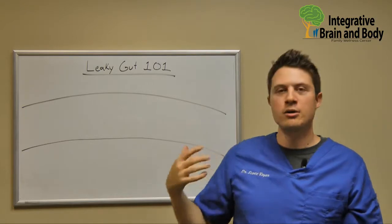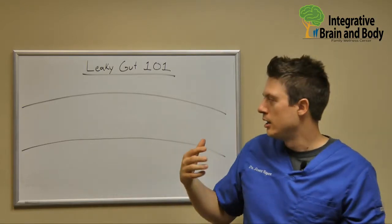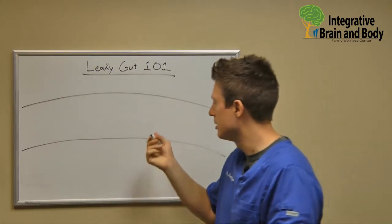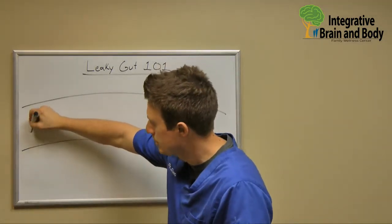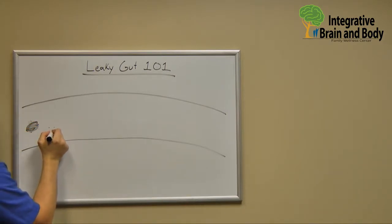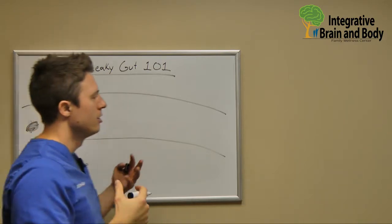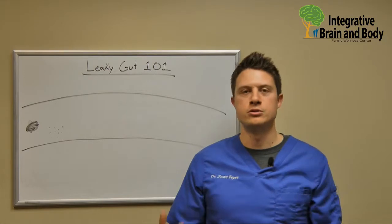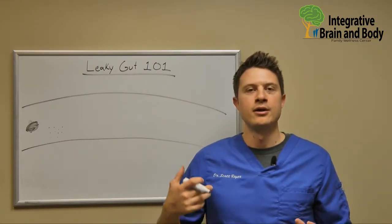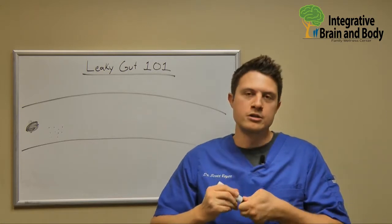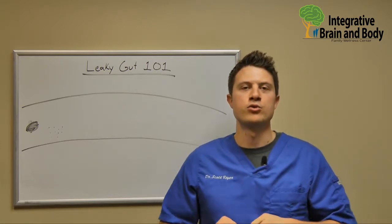When it comes to our digestive system, its job and responsibility is basically: if we eat a big chunk of food, we should be able to break down that food into small enough particles so that our gut has the ability to pick and choose what it pulls into our bloodstream. It's what they call semi-permeable. Our gut barrier is almost like a screen door.